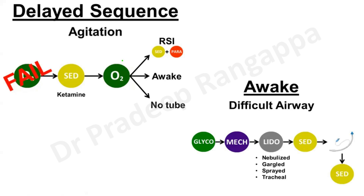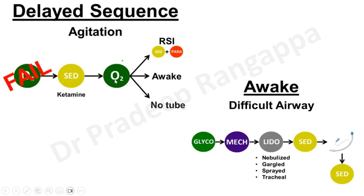If difficulty to ventilate and difficulty to intubate is anticipated, one would adopt awake intubation — giving an antisialagogue to reduce secretions, local anesthetics like lidocaine spray to anesthetize the oral airway, then sedation and intubation without paralytics. These are the four situations. The most common are traditional or rapid sequence induction, and the others arise when difficulty in intubation or ventilation is anticipated.